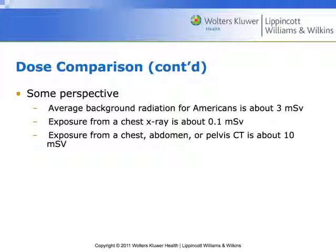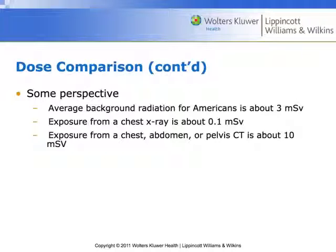Here are some numbers worth memorizing. The average background radiation for Americans is 3 millisieverts annually. The exposure from a chest x-ray is about 0.1 millisieverts. From a chest, abdomen, or pelvis CT it's about 10 millisieverts — again, that 100-times ratio — and it's a little over 3 times that of natural annual background radiation.